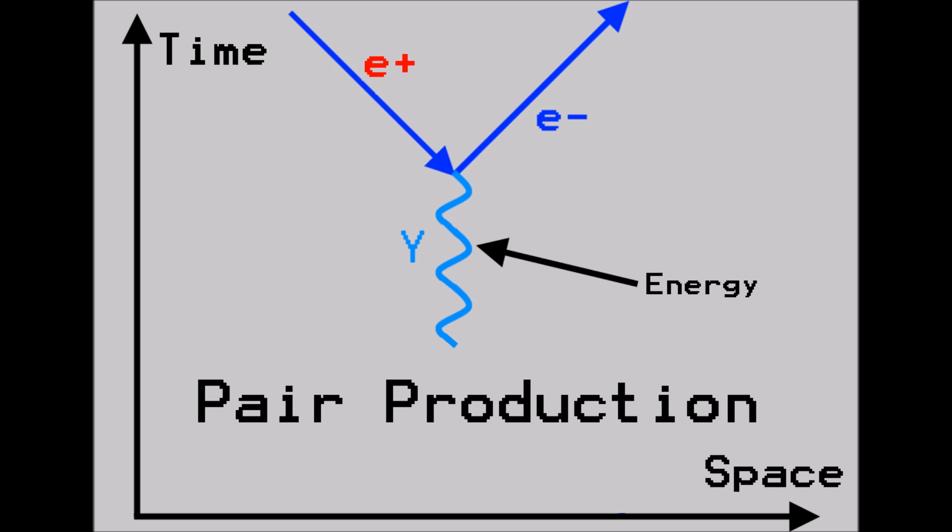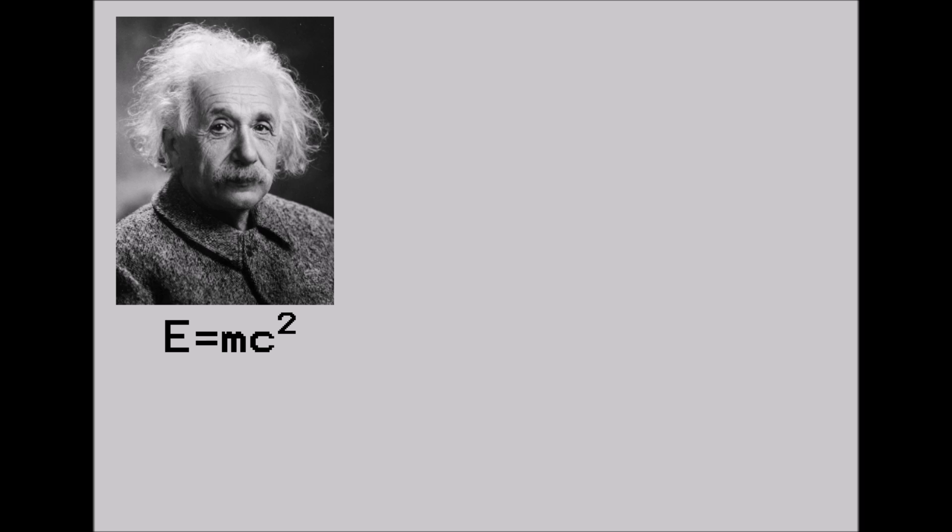Pure energy, in this case in the form of a photon, spontaneously produces a pair of matter-antimatter particles. All of this is allowed because of Einstein's energy-mass equivalence relation. Annihilation converts the mass of a particle and an antiparticle into energy. Pair production converts energy into the mass of a particle and an antiparticle.